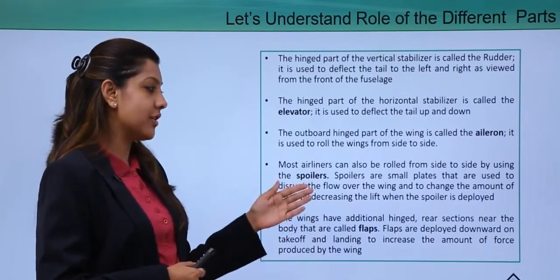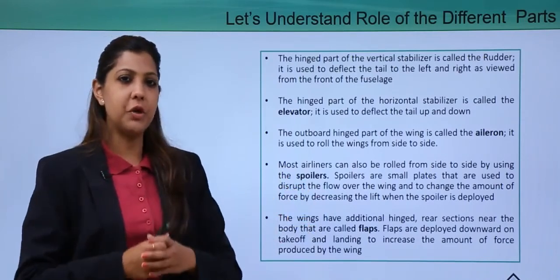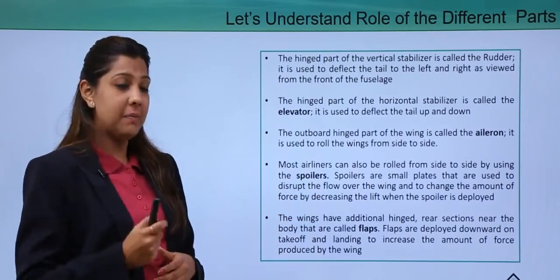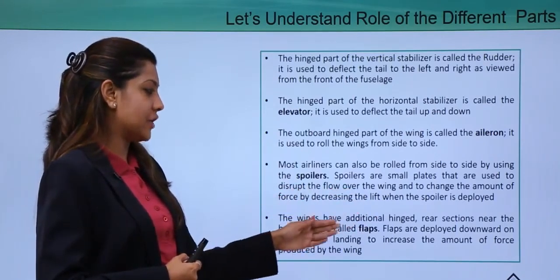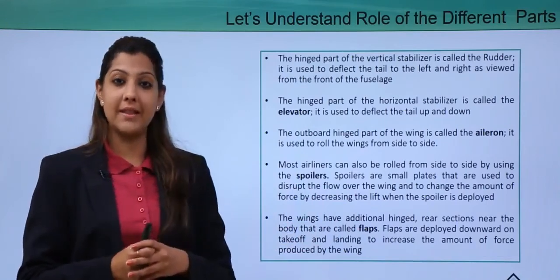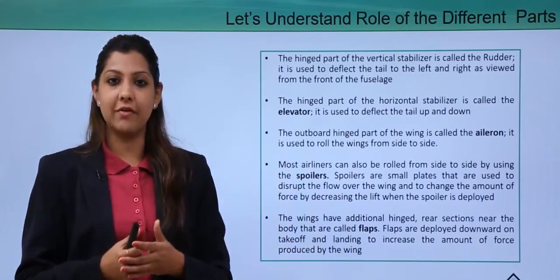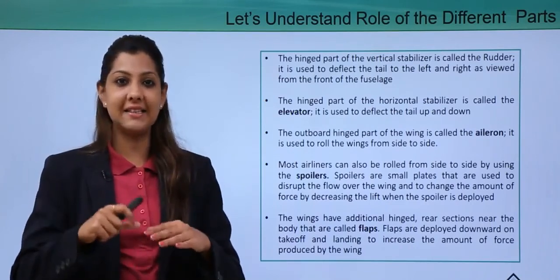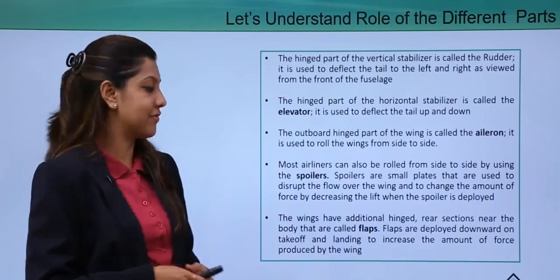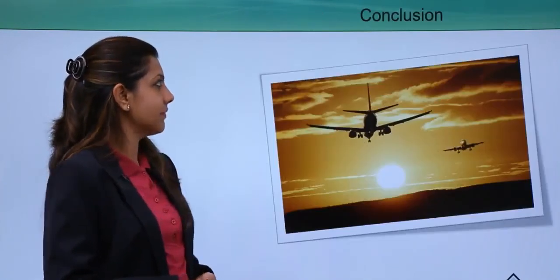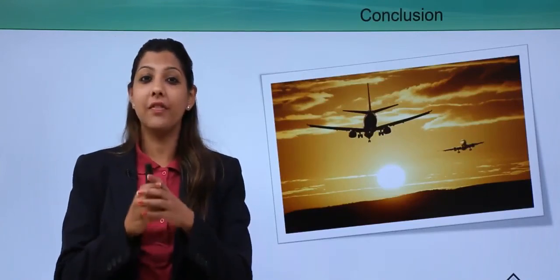The wings have additional hinged rear sections near the body known as flaps. Flaps are deployed downward on takeoff and landing to increase the amount of lift force produced by the wing, helping the aircraft take off and land effectively.